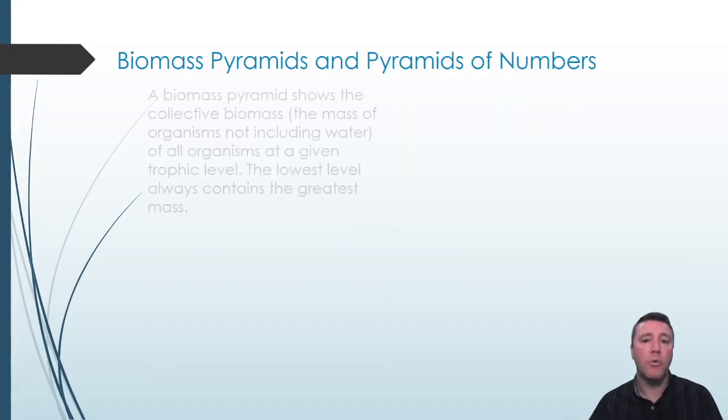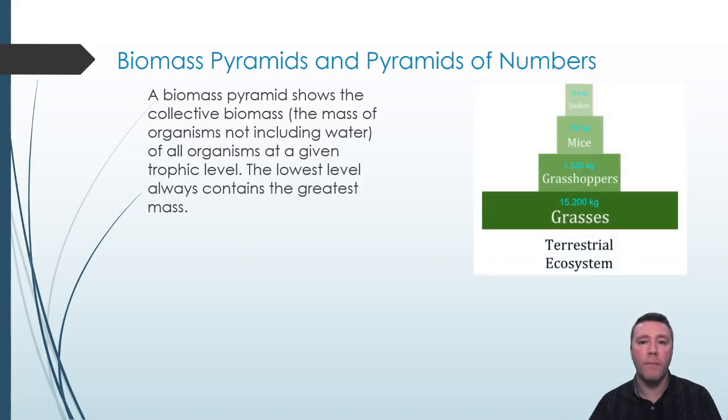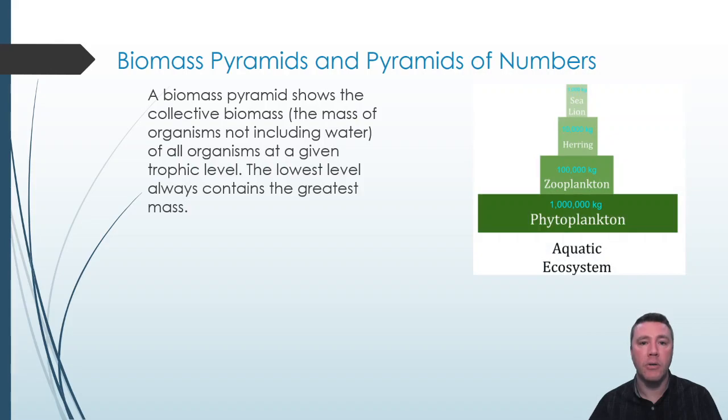Biomass pyramids show the total biomass of all organisms in each trophic level. The greatest biomass is always found at the producer level. This is true in both terrestrial ecosystems, where photosynthetic plants like grasses make up the producers, and in aquatic ecosystems, where algae and phytoplankton comprise the producer level.